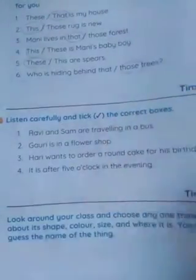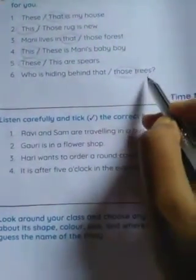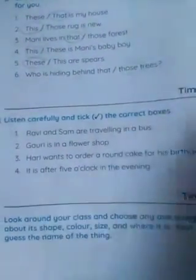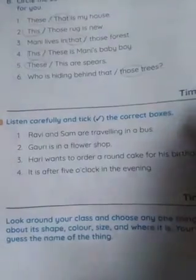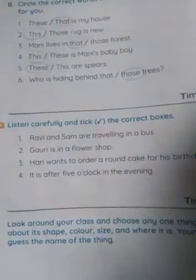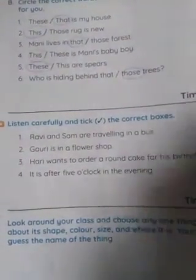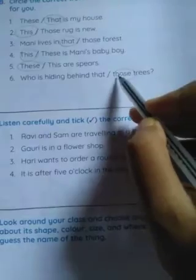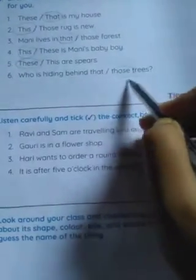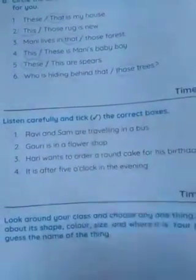Number 6: Who is hiding behind that or those trees? We see there are trees — so many trees, more than one. So T-H-O-S-E, 'those', is the correct one. Circle 'those'. Who is hiding behind those trees?